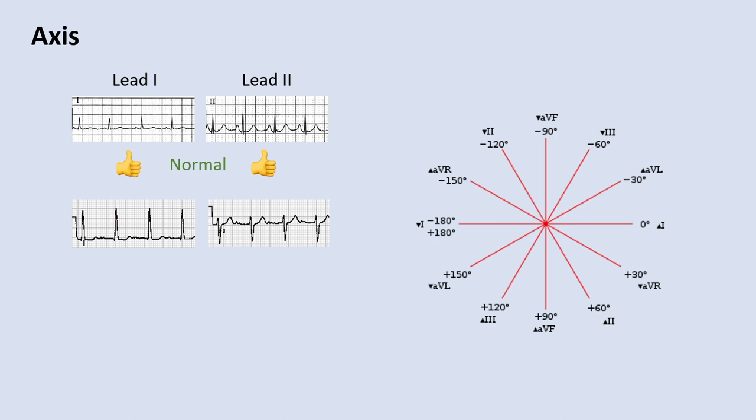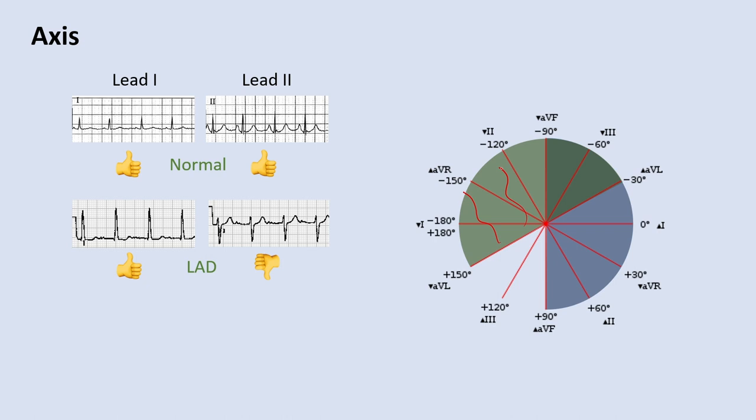Next example: you have a positive QRS complex in lead 1 and a negative complex in lead 2. So you do a thumbs up with your left hand and a thumbs down with your right hand. Whatever thumb is pointing up tells you where the axis deviation lies. Your left thumb is pointing up, so this is left axis deviation. A positive QRS in lead 1 and a negative complex in lead 2 means the depolarization is going in the left axis deviation direction.